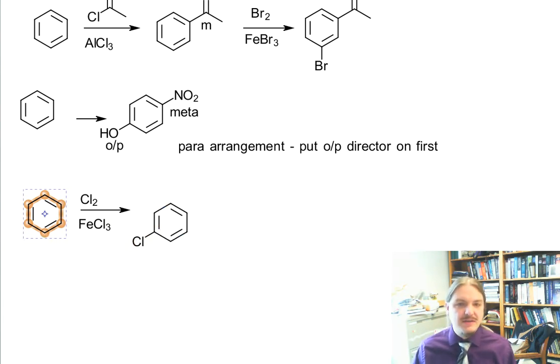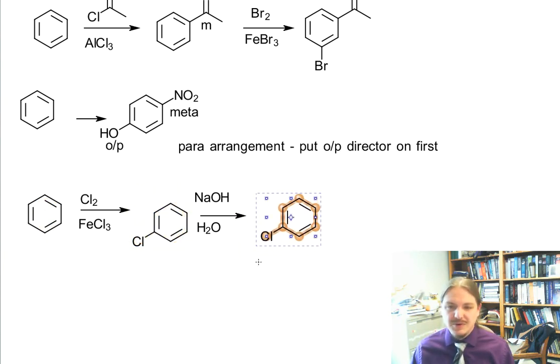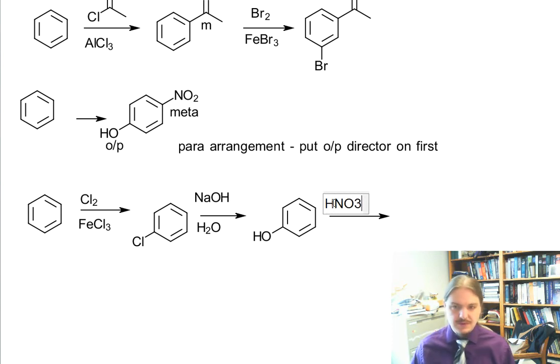So if we first chlorinate the ring and then that chlorinated ring can react with sodium hydroxide and water under appropriate conditions, followed by acidic workup, you get phenol. And then you can nitrate phenol and get para nitro phenol.